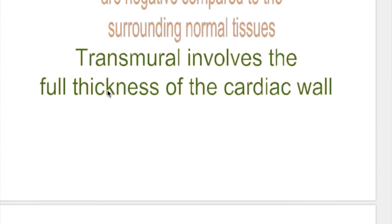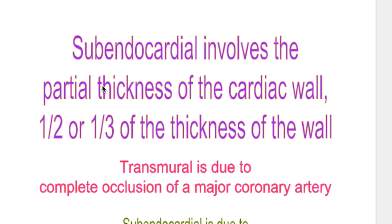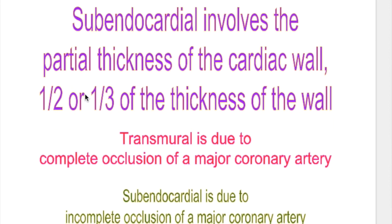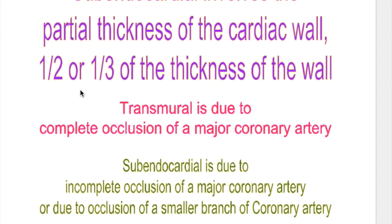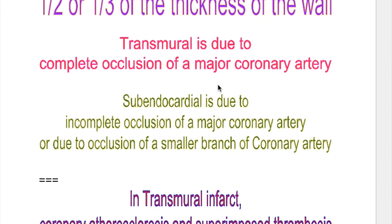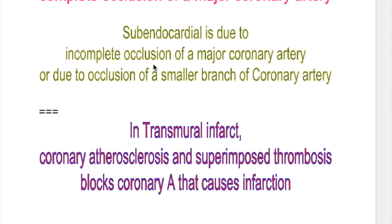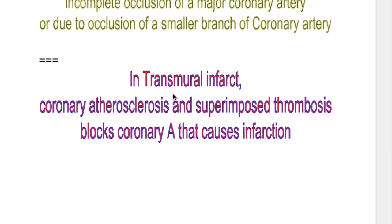Transmural infarct involves the full thickness of the cardiac wall, whereas subendocardial infarct involves partial thickness — about half or one third of the thickness. Transmural infarct is due to complete occlusion of a major coronary artery, while subendocardial infarct is due to incomplete occlusion of a major coronary artery or occlusion of a smaller branch of the coronary artery.